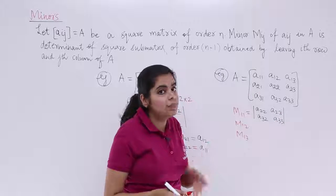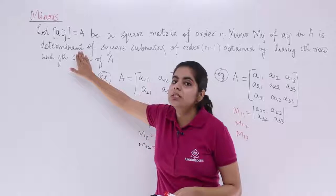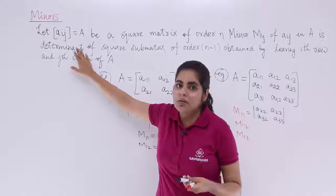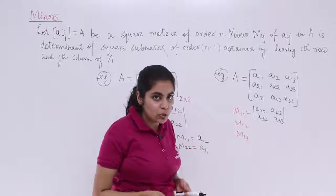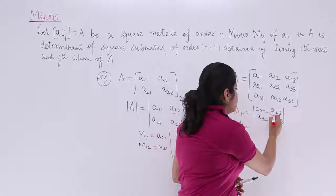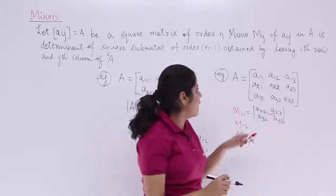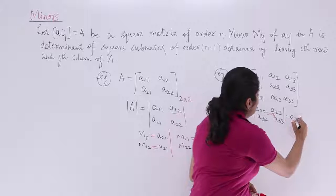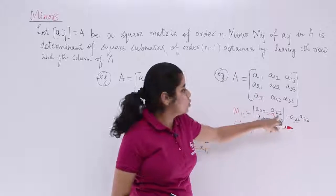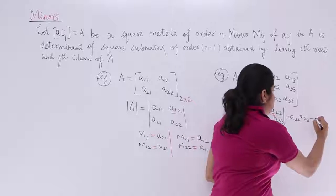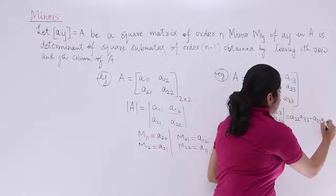Hence, we obtain a sub-determinant and the definition was written here that here we obtain a determinant. Right. Now you have to compute this determinant value. As we know, in a 2x2 determinant case, what you need to do is just cross-multiply and write the value as A22, A33 minus A32, A23.